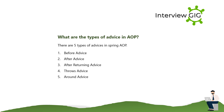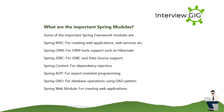What are the types of advice in AOP? There are five types of advices in Spring AOP: one, Before Advice; two, After Advice; three, After Returning Advice; four, Throws Advice; and five, Around Advice.